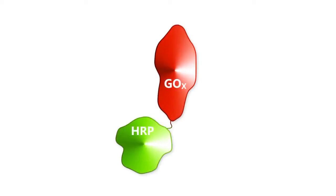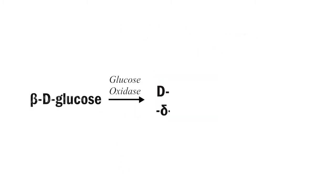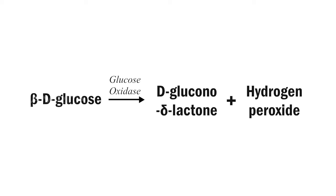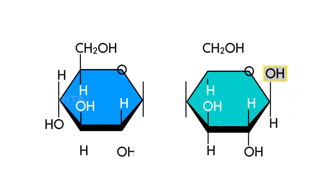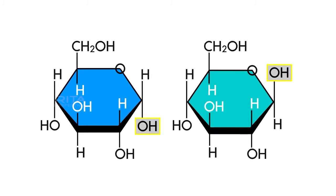Estimation of glucose by enzyme glucose oxidase gives a true glucose concentration due to its high specificity and sensitivity. Glucose oxidase catalyzes the oxidation of beta-D-glucose to D-glucono-delta-lactone and hydrogen peroxide. It is highly specific for beta-D-glucose and does not act on alpha-D-glucose.